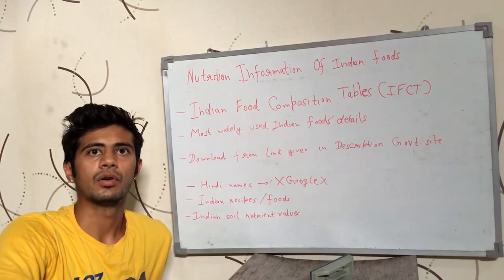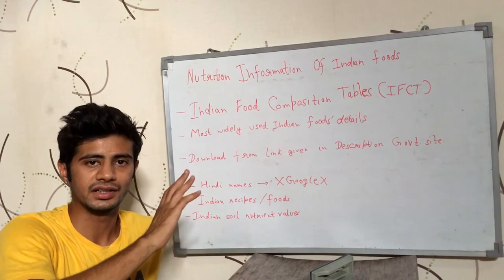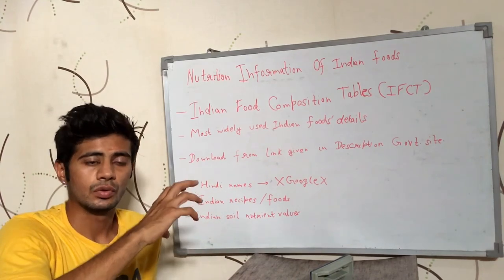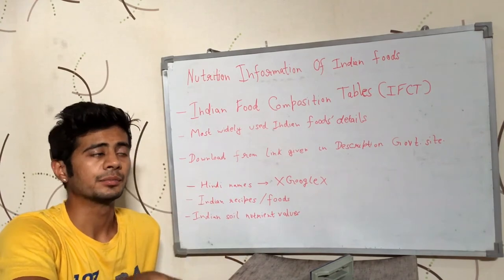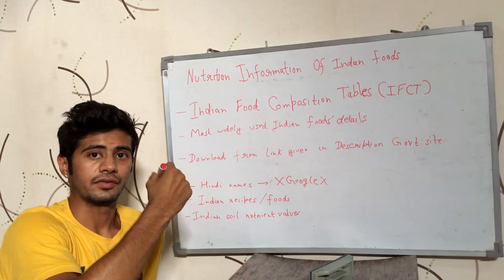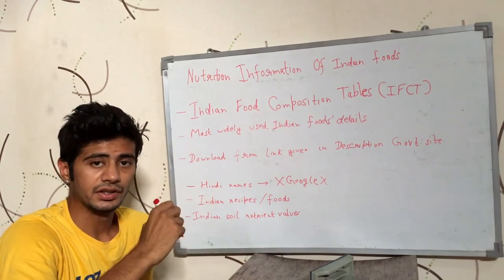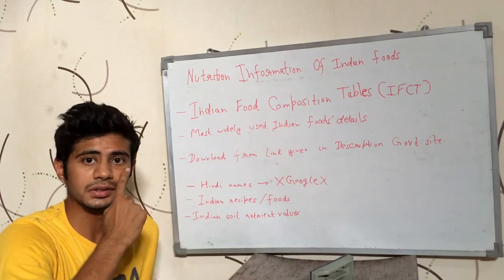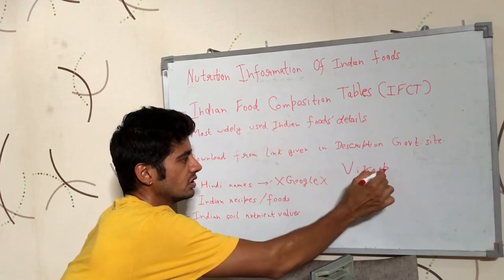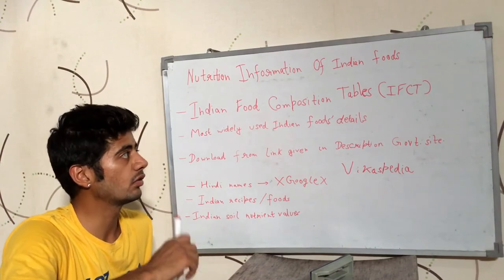The Indian Food Composition Table was released by the Government of India. Famous Indian foods such as honey, wheat, and fruits found in India — their nutrient values are included in this resource. I will take the reference from this. You can download it from the website, which is a website of the Indian government.